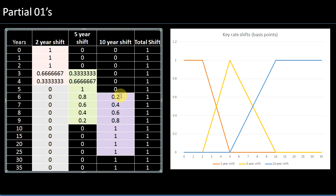In this example we simplified to three key rates, but you don't have to — you can have two, five, or in a typical financial institution anywhere between eight, ten, or even fifteen different key rates. In our next video we'll talk about how to use key rate shifts to hedge a particular portfolio. If this is a complex area and you need more time to understand the basics, post any questions in the comment section or send us an email. Thanks a lot.